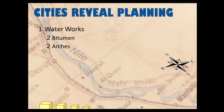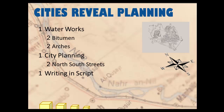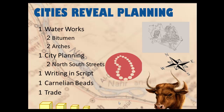Looking at city organization, they have waterworks and use bitumen — a byproduct of heavy oil deposits underneath the landmass, like a petroleum used to waterproof their tunnels. They have sewer systems, arches, and fantastic city planning with north-south streets. Looking at Mohenjo-daro, it's laid out in different sections corresponding to parts of the caste system. They wrote in script we cannot yet read, and they had carnelian beads and traded regularly.